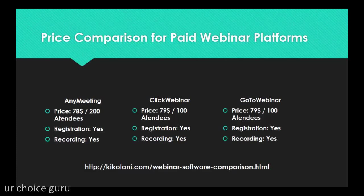First we have AnyMeeting, a pretty huge webinar platform. The price starts from $78 per month for 200 attendees, and it includes registration forms and recording. Then we have ClickWebinar, which in my opinion has a better, more user-friendly interface. The price starts at $79 for 100 attendees — it has registration forms, landing pages, reminders, and recording. Then we have GoToWebinar, probably the most popular of all, which top internet marketers use because it's the most efficient and has been battle-tested for a long time.